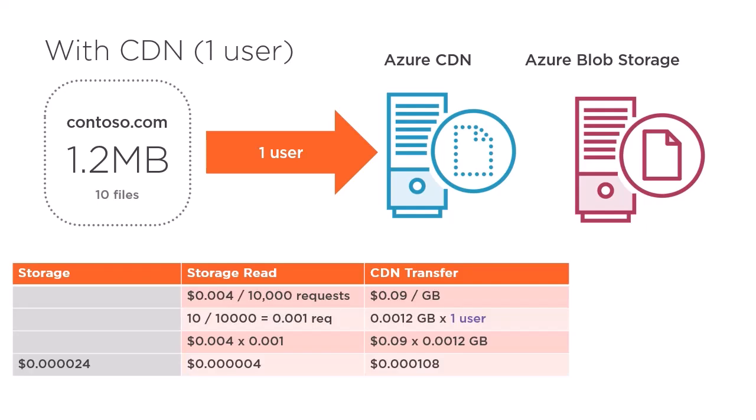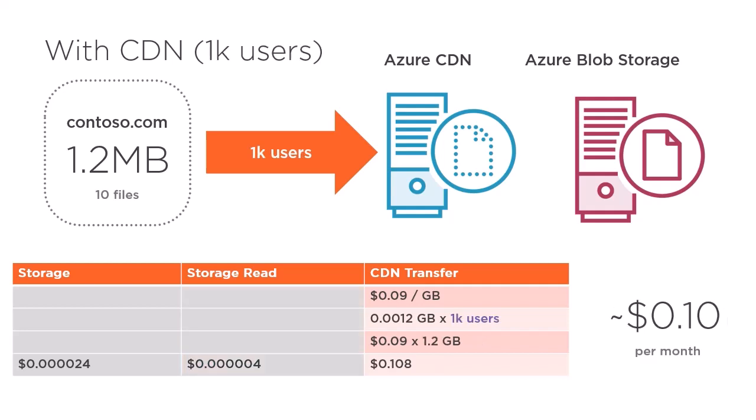Now, if we introduce the CDN transfer cost to our calculations, we can see that the storage read operations reduce from 1 million to only 10, which brings total storage cost to not even one hundred-thousandth of a cent. From now on, storage will represent less than one cent of our total cost and CDN costs will take over. CDN transfer cost is measured in bytes over the wire, so we take the 1.2 megabytes, convert it to gigabytes, and multiply by the number of users — in this case just one. This brings us to a grand total of not even one-thousandth of a cent. With one user, we can't measure the cost to even a cent, so let's increase the CDN load to 1,000 users.